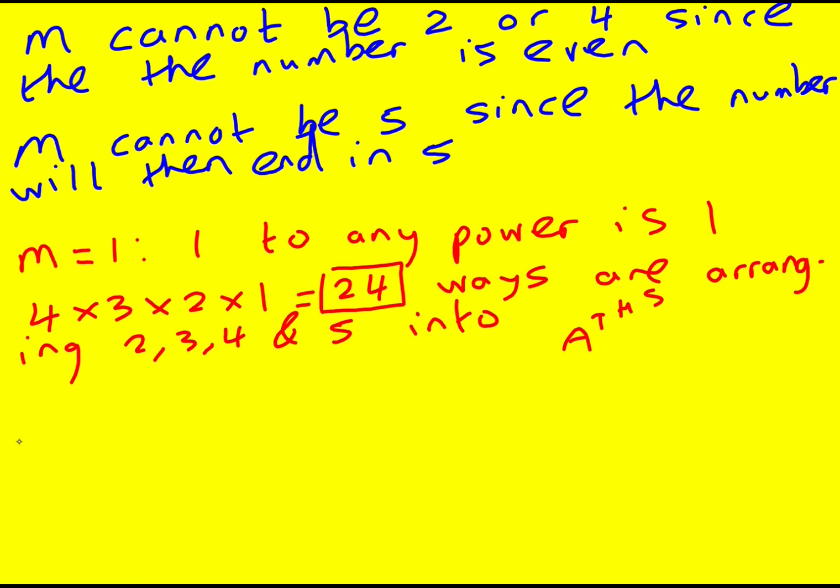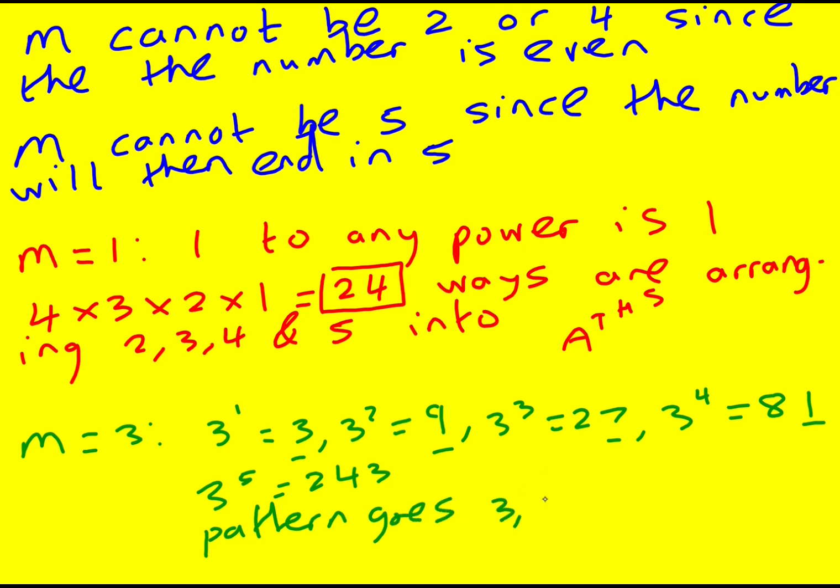This leaves us with case 2, M equal to 3. So let's try to solve some powers of 3. 3 to the 1 is 3. 3 squared is 9. 3 to the 3 is 27. It's going 3, 9, 7. 3 to the 4 is 81. When we times by 3 again, it will end in 3 again. So pattern goes 3, 9, 7, 1 and repeats.